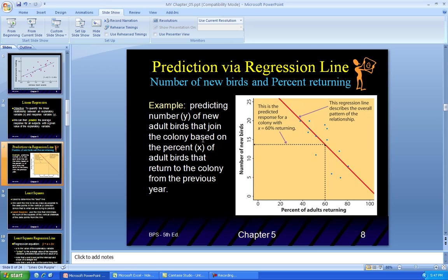So the next thing is we have a prediction here via regression line. So this is just giving you the basic idea, the number of new birds and percent returning. So there seems to be a trend going down. There's a trend going down. If you were doing a correlation, you'd get a negative correlation here. So this is the regression line describes the overall pattern of the relationship between percent of adults returning and the number of new birds. So it seems like the more the adult birds return, then you can see the less number of new birds that they have. So this predicted, this is a colony with 60 percent returning here. This is some type of indication with 60 percent. You can see the 60 percent here and about less than 15 number of birds. So you can predict this of the new adult birds that join a colony based on a percent of adult birds that return to the colony. So that's the example here.